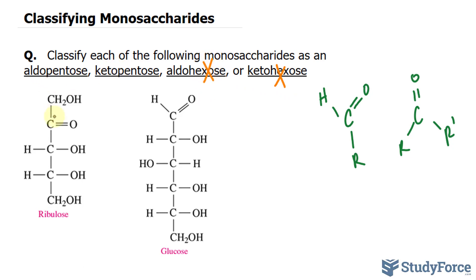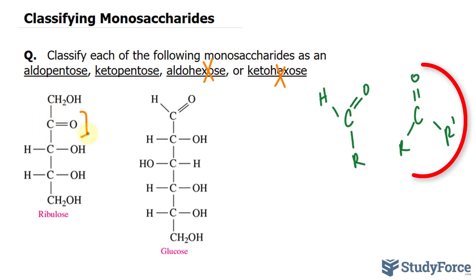Over here we have a carbonyl group — the carbon double bonded to oxygen. Then you have the rest of the molecule here and the rest where they begin with carbon. That right there is a ketone. So this is a ketopentose.